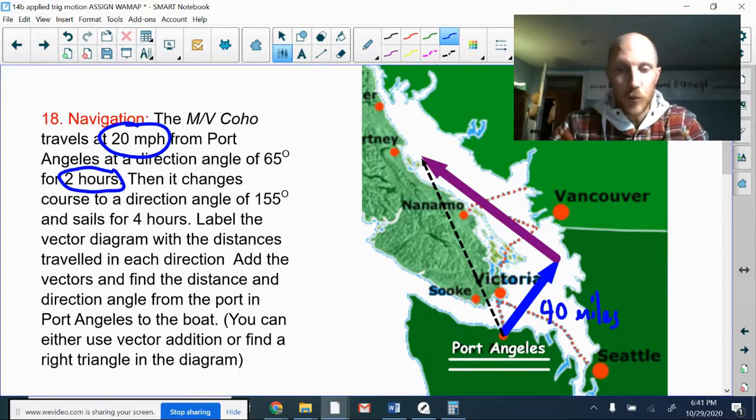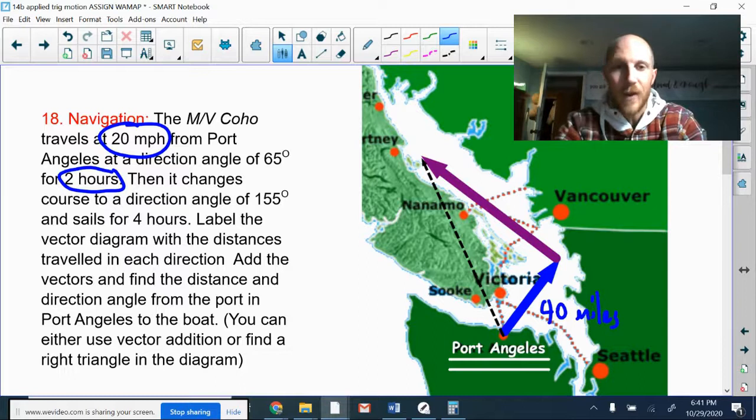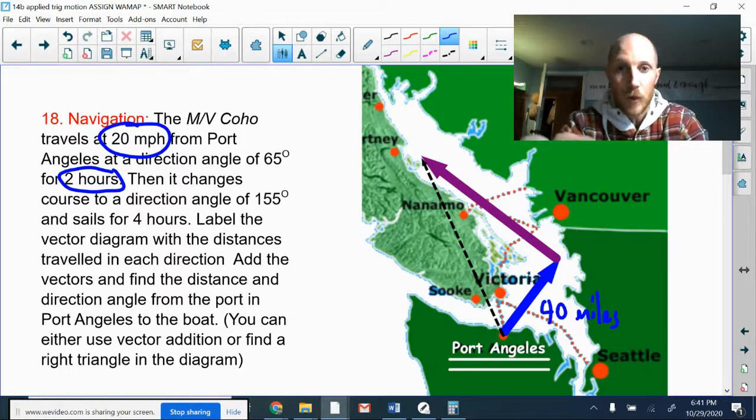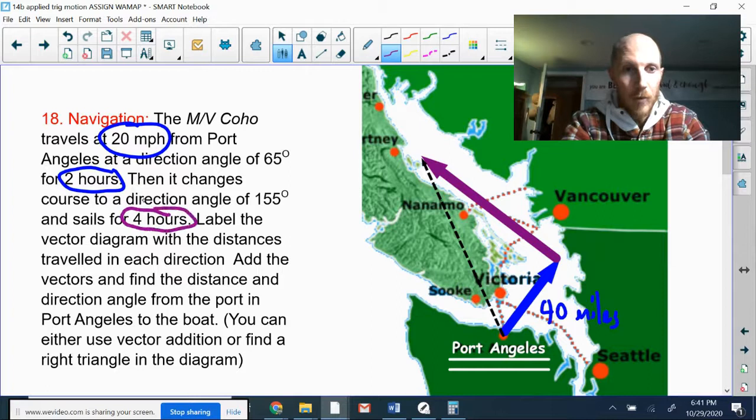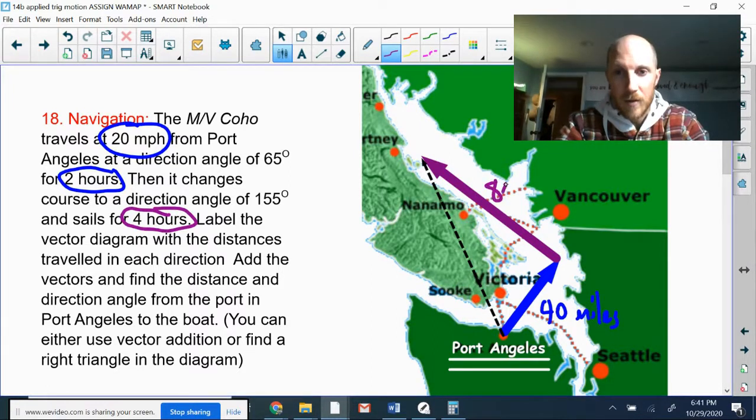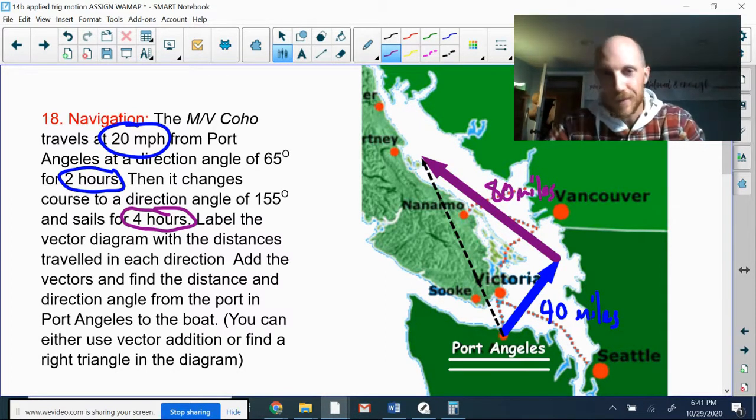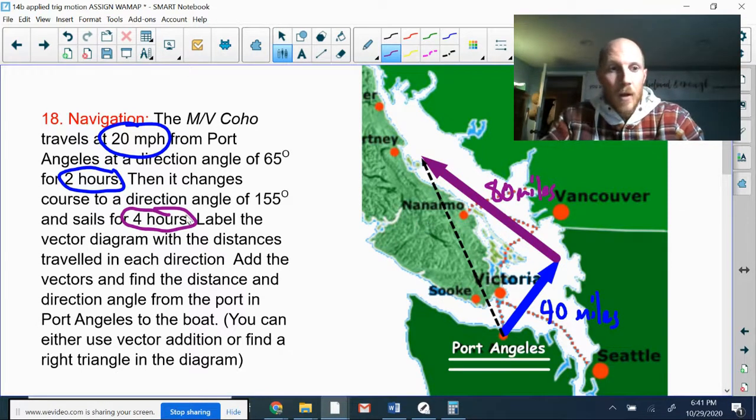Then it changes course to a direction angle of 155 degrees and sails for four hours, still the same speed. So four hours times 20 miles an hour is going to be 80 miles as it heads up the inside passage past Vancouver bound for who knows where. Label the vector diagram with distances traveled in each direction. I did that, check.